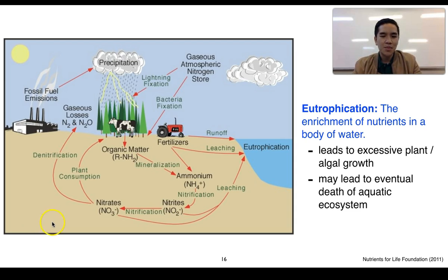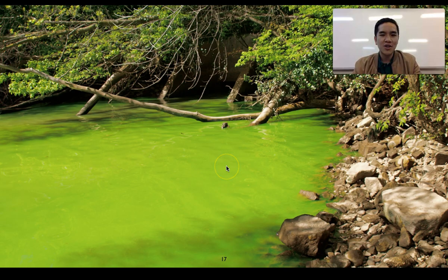From this diagram, the important thing to note is that processes like leaching as well as runoff that can occur near bodies of water can contribute to this process of eutrophication. We usually associate eutrophication as an excessive growth of algae, and so we see these algal blooms that typically turn the water a bright green color due to the presence of this algae.